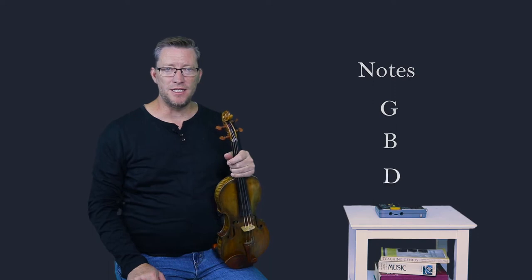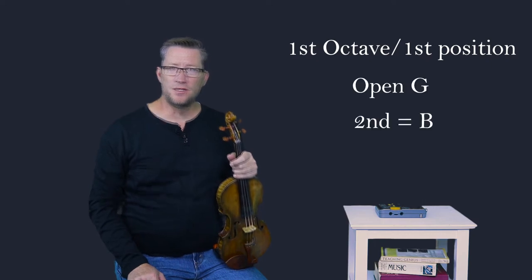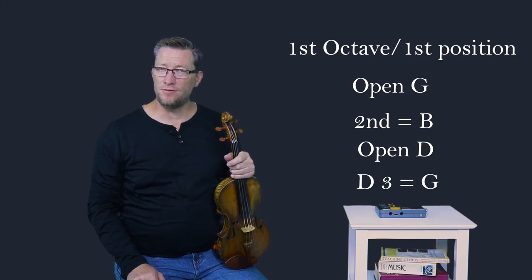The notes for these arpeggios are G, B, and D. I'll play the first one-octave arpeggio in first position, beginning with the fingerings: open G, second finger on the G string for the note B, open D, and third finger on the D string for the note G.